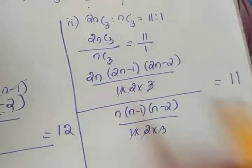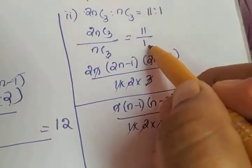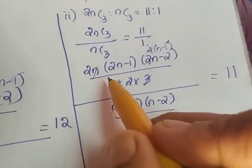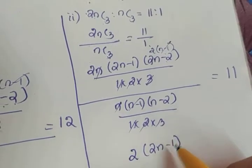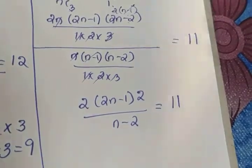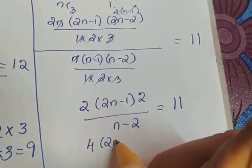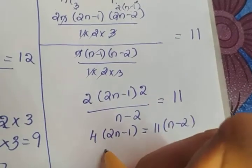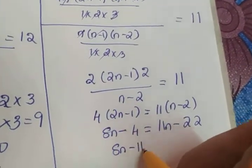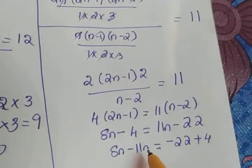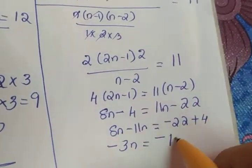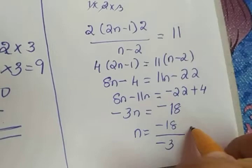The 1 into 2 into 3 denominators cancel. N cancels with N, and from 2N minus 2 taking 2 as common gives 2 into N minus 1, so N minus 1 cancels. The numerator becomes 2 into 2N minus 1 into 2, and the denominator has N minus 2, equal to 11. Cross multiplying: 4 into 2N minus 1 equals 11 into N minus 2. Expanding: 8N minus 4 equals 11N minus 22. Collecting N terms: minus 3N equals minus 18, so N equals 6.